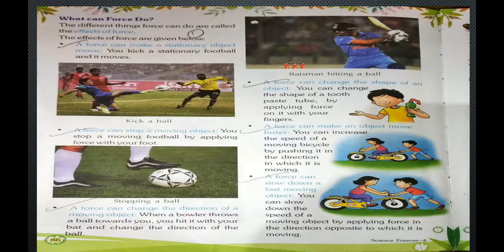Second, a force can stop a moving object. You stop a moving football by applying force with your foot. If a ball is coming with great speed, you can stop it by applying force with your hand or foot. Third, a force can change the direction of a moving object. When a bowler throws a ball towards you, you hit it with your bat and change the direction of the ball.